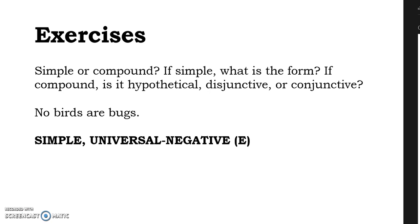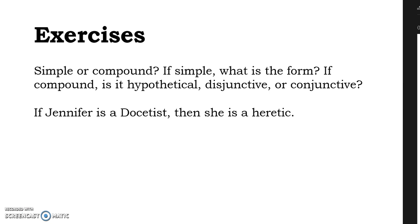'If Jennifer is a docetist, then she is a heretic.' We have three terms at work here: Jennifer, docetist, and heretic. That tells us it's a compound. Plus, we see this if-then structure, which we recognize as one of the three compound types — the hypothetical proposition. So this is a compound hypothetical: if x, then y.